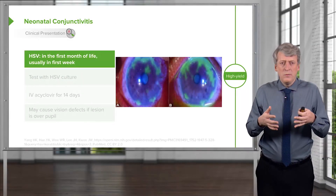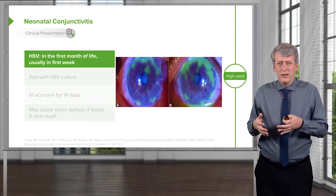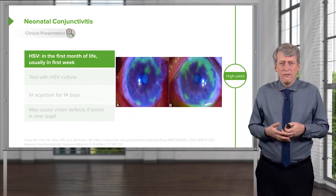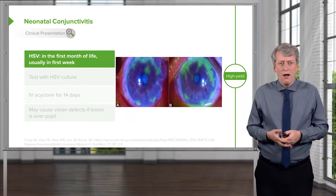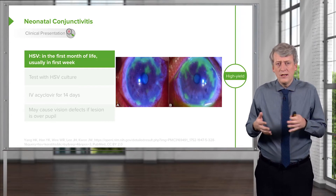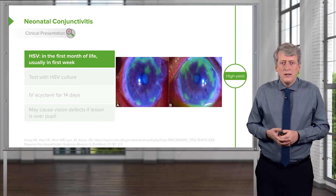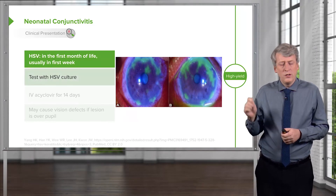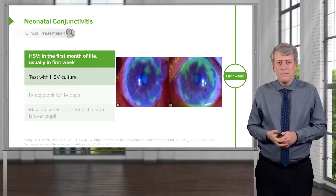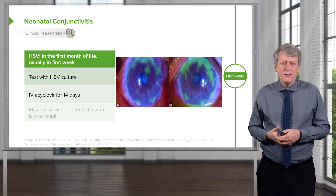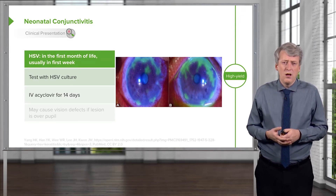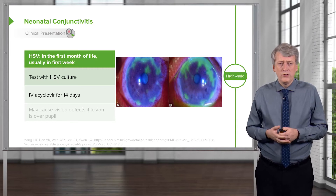Another sexually transmitted infection for an infant, either exposed in utero or later in life, is HSV of the eye. This typically presents in the first month of life as skin, eye, and mouth disease. We have to aggressively treat this. We test it with an HSV culture, which grows very quickly, usually within a day. For these infants, we'll treat them with IV acyclovir for 14 days. These infants really need to be hospitalized and an ophthalmologist should be consulted.